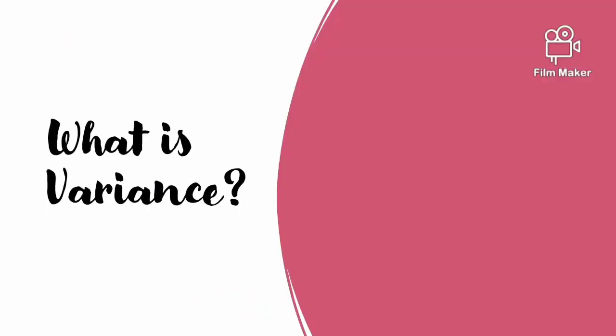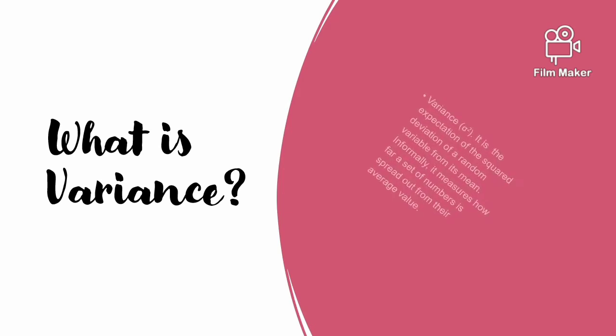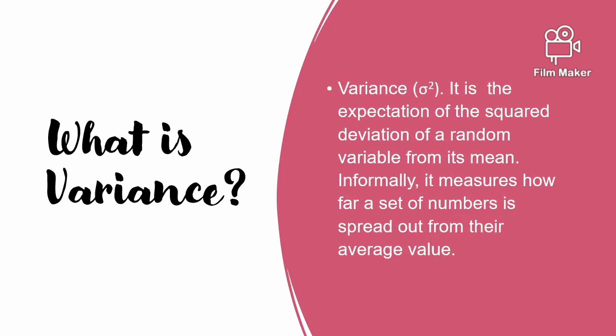What is variance? Variance, or sigma squared (σ²), is the expectation of the squared deviation of a random variable from its mean. Informally, it measures how far a set of numbers is spread out from their average value.